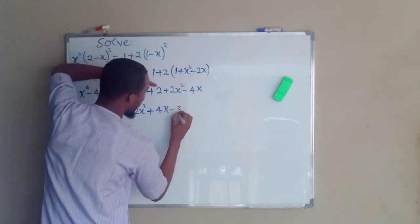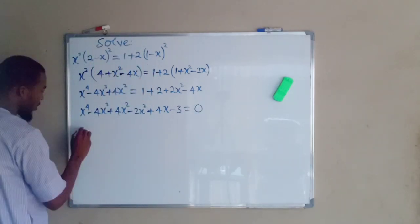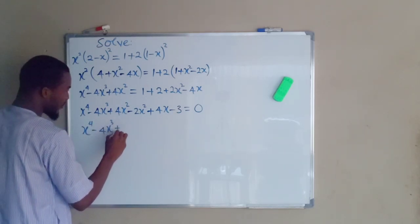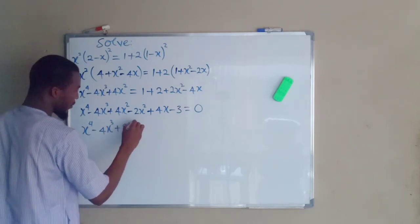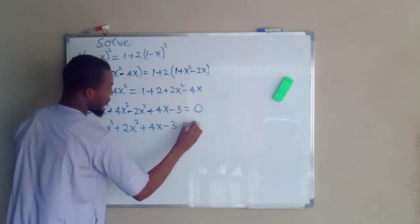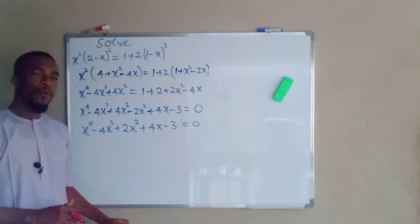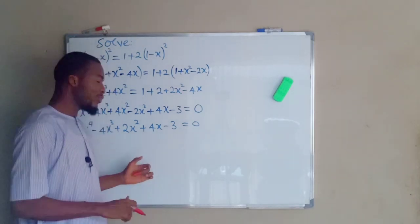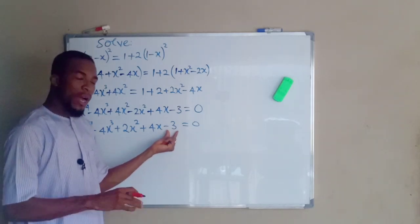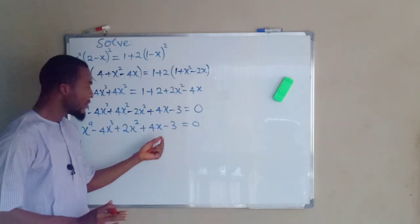Then we bring the 4x term, which turns positive. But 1 plus 2 equals 3, so bringing it to the left hand side it becomes negative 3, and the right hand side is zero. Further simplifying: x to the power of 4 minus 4x to the power of 3 plus 2x squared plus 4x minus 3 equals 0. We now have a polynomial of degree 4. There are a couple of ways to solve this, but I prefer to factorize. We have a constant of negative 3, so we need suitable factors.